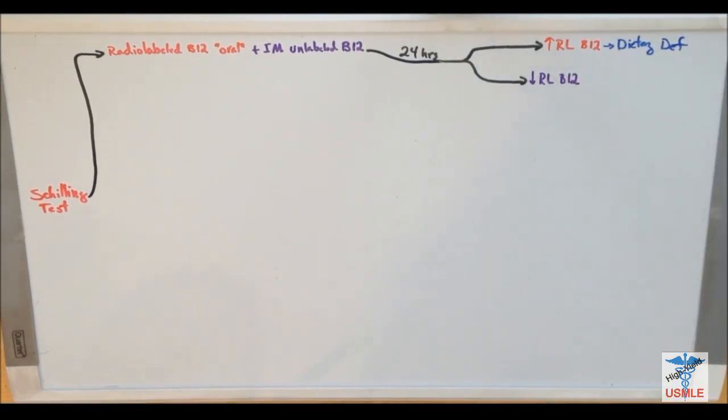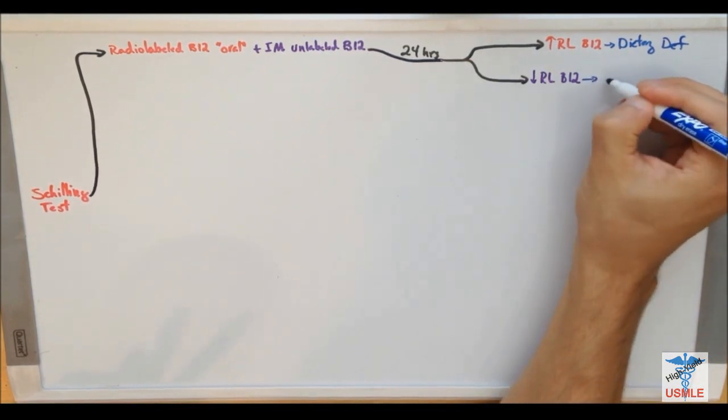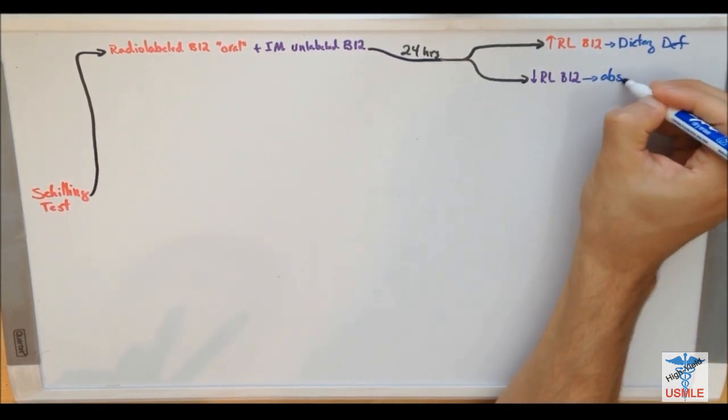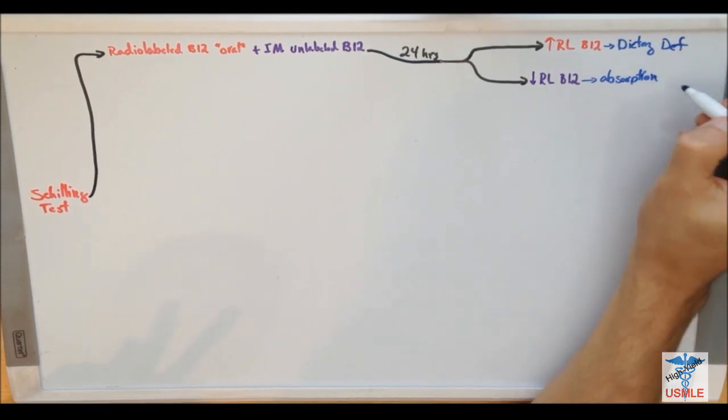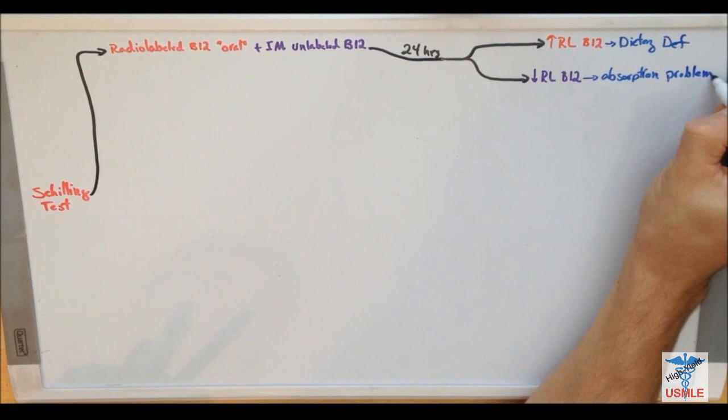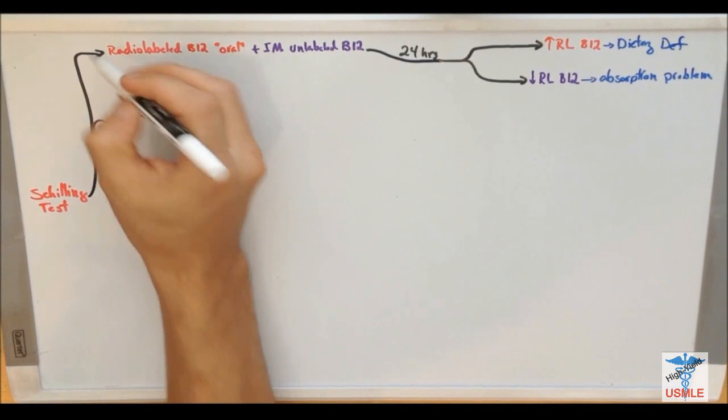And then if it's decreased, we realize that there's something else behind this picture. There should be a pathologic event that is not allowing the radio-labeled B12 to get absorbed from your GI system. So this would be absorption problem. Now, once you do this step, and let's say you get a decrease in radio-labeled B12, so now you want to see what is causing this result. So the next step is to stage 2.